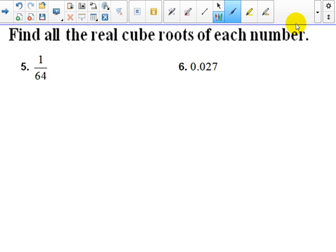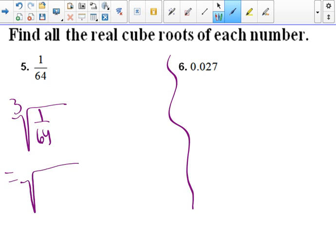So 5 and 6 is find all the real cube roots of each number. So you want to find what is the cubic root of 1 over 64. So when we get that, you think, what can I multiply together 3 times and get 64? Well, that would be 4. 4 times 4 times 4. So this is equal to the cube root of 1 fourth times 1 fourth times 1 fourth.